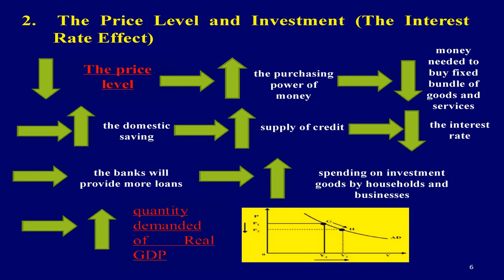The relationship between the price level and investment explains the interest rate effect. As the price level decreases, holding all other factors constant, the purchasing power of money will increase. When the purchasing power of money increases, less money is needed to buy a fixed package of goods and services, thereby increasing domestic saving. If domestic saving increases, the supply of credit will increase. This in turn decreases the interest rate, hence banks will provide more loans. Therefore, greater spending on investment goods by households and businesses is achieved.